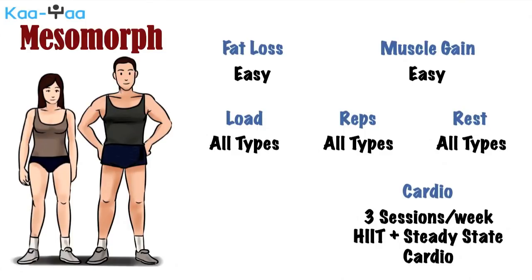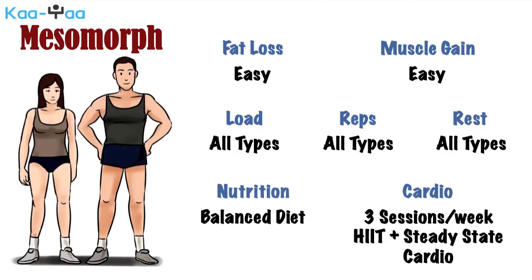Three sessions of cardio in a week, with two sessions of HIIT and one session of steady-state cardio should do. A healthy and balanced diet is important for a mesomorph to maintain their athletic build.